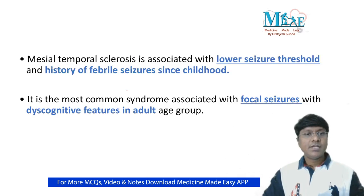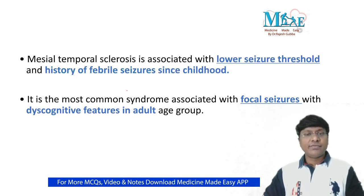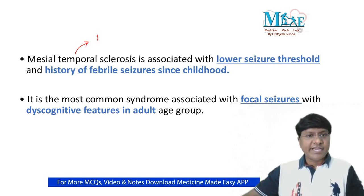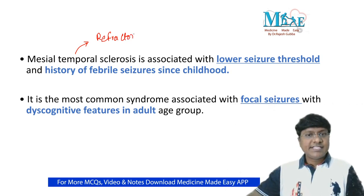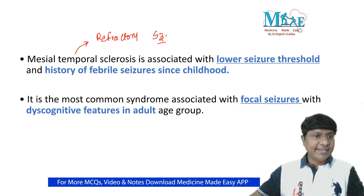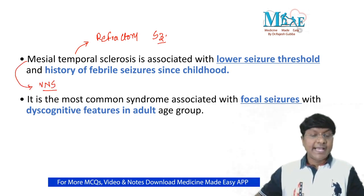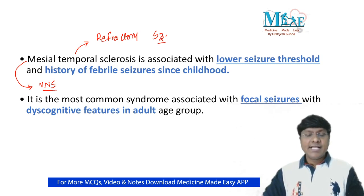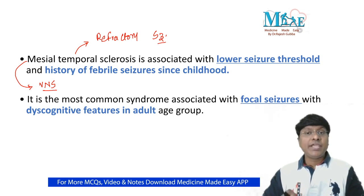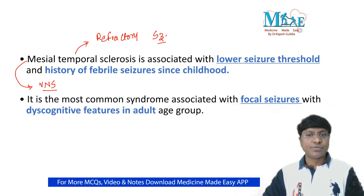Mesial temporal lobe sclerosis is a disorder characterized by refractory seizures — these individuals don't respond to medical management. They require vagal nerve stimulation as part of treatment, and the definitive treatment is amygdalo-hippocampectomy.